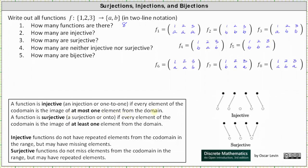For example, for function one, the element a from the codomain is an image of three elements from the domain. In function two, the element b from the codomain is an image of three elements from the domain. For all the other functions, there is one element from the codomain that is an image of two elements from the domain. Therefore, none of the functions are injective — the answer to number two is zero.